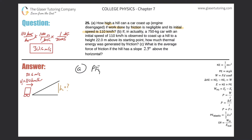For letter A, we set the potential energy at the final location equal to the kinetic energy at the initial location. Expanding this: mass times gravity times final height equals one-half times mass times initial velocity squared. Notice the masses cancel on both sides.